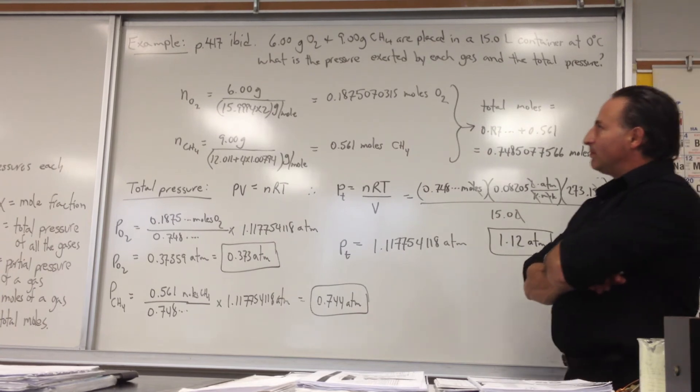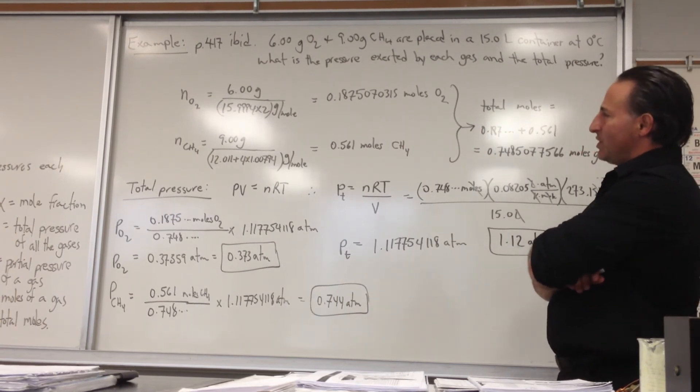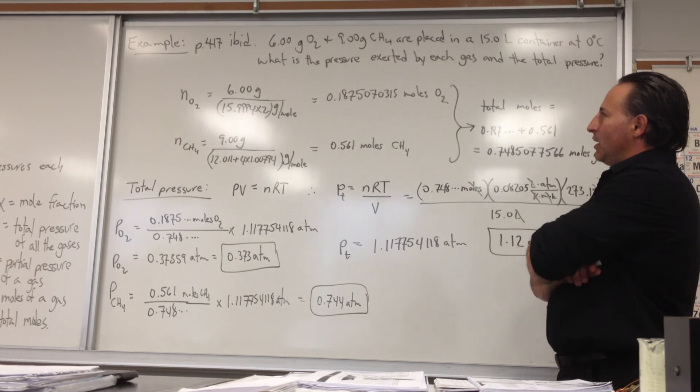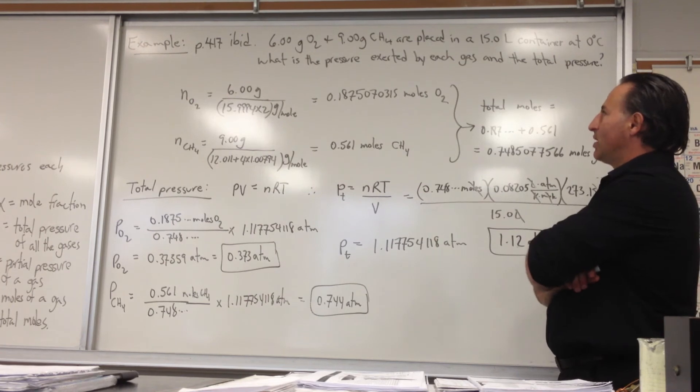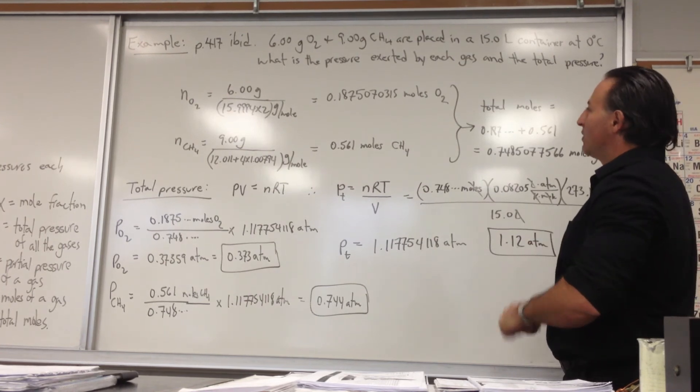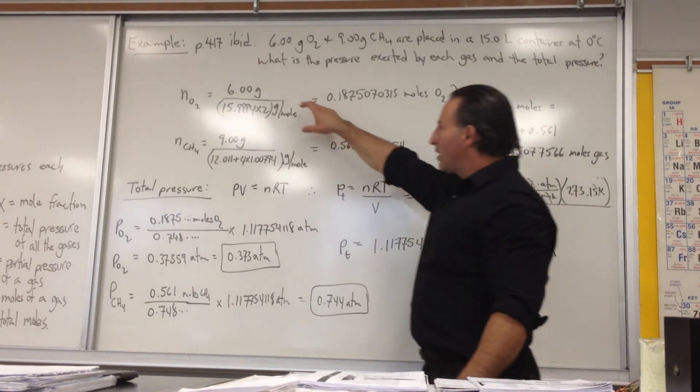An example of the partial pressure question comes from page 417 of our textbook. It says 6 grams of oxygen and 9 grams of methane are placed in a 15-liter container at 0 degrees Celsius. What is the pressure exerted by each gas and the total pressure?